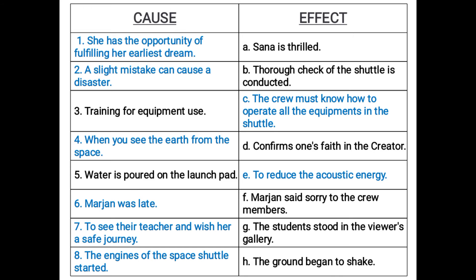So, you have to write the reason — that she has the opportunity of fulfilling her earliest dream, means her oldest dream when she was a child, was to move into space. As she was very fond of all things in space and she used to buy toys related to the space and the solar system. This was something which made her thrilled when she was actually going to be an educator in space.